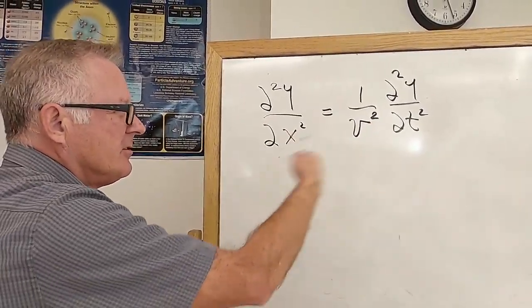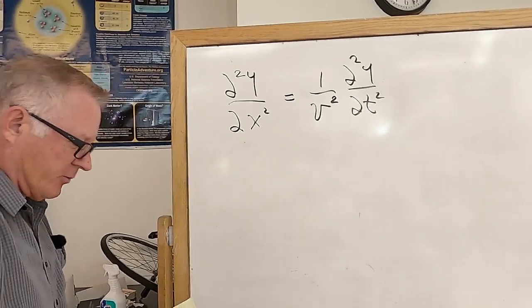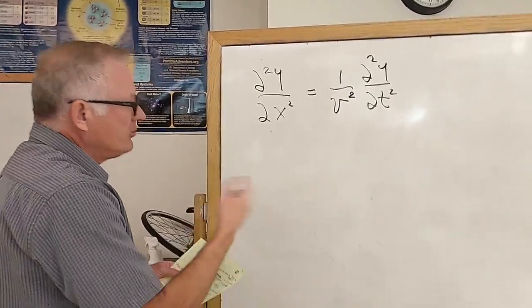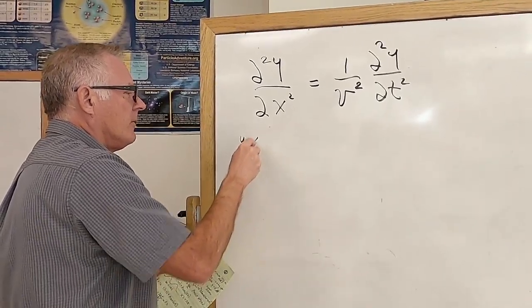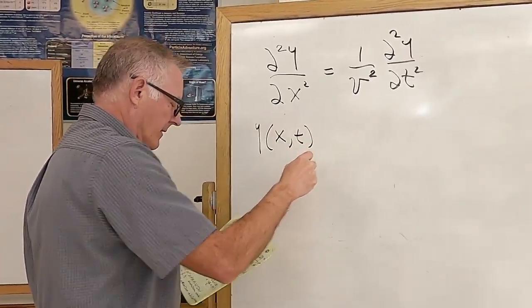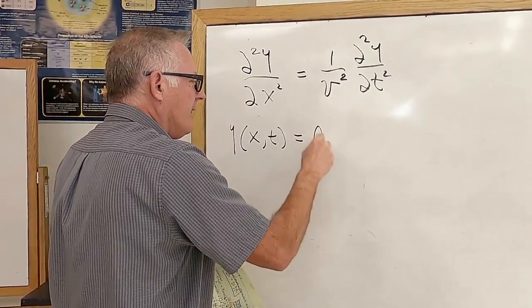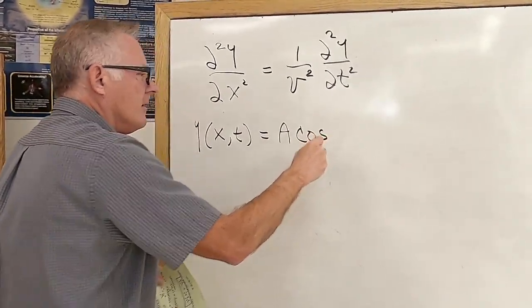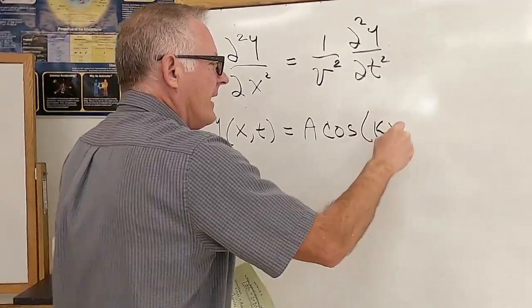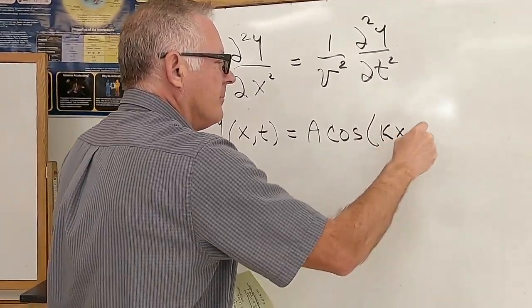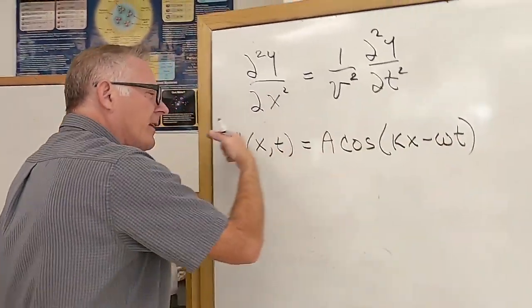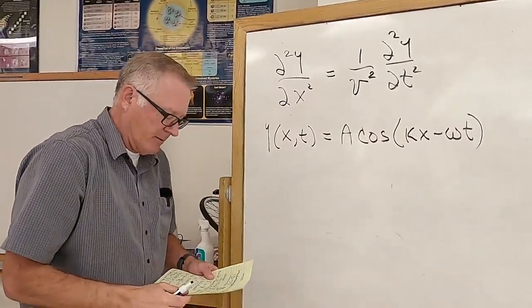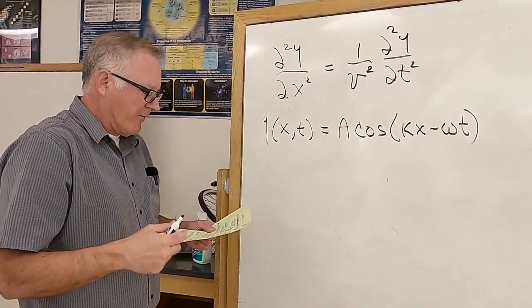The solution to this wave equation is y as a function of x and t equals A cosine(kx − ωt). This represents a wave traveling to the right. If it were a plus sign instead, it would be a wave traveling to the left.